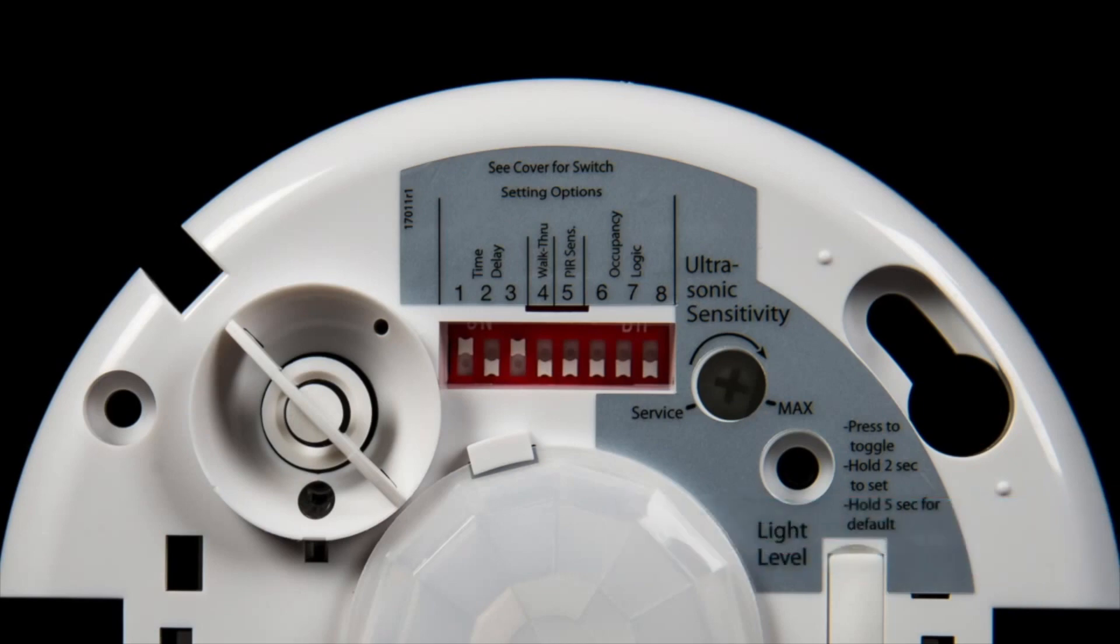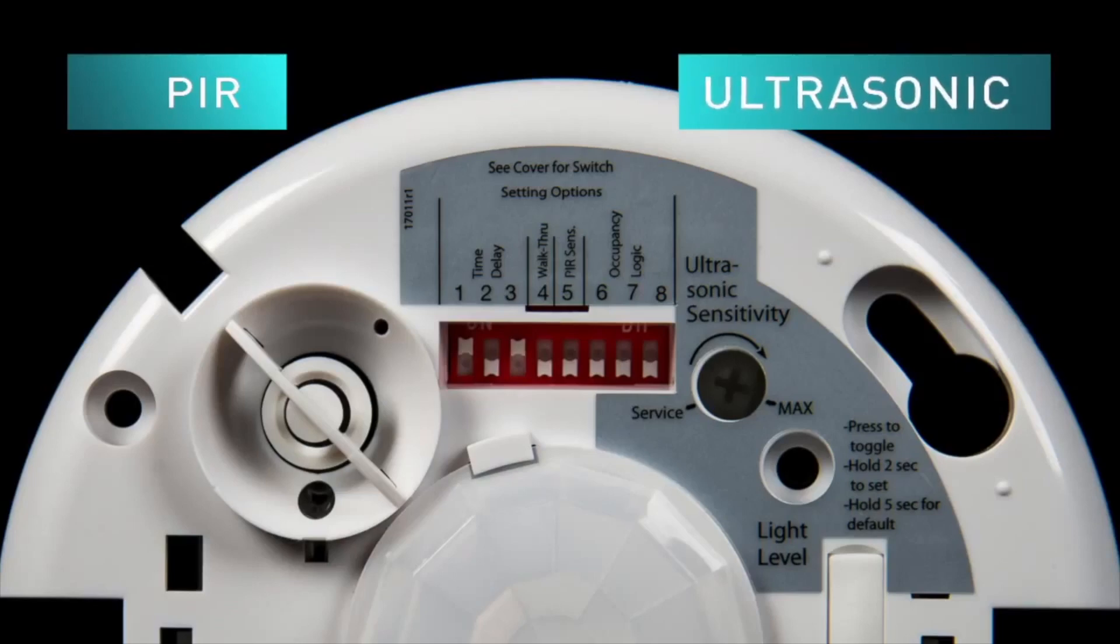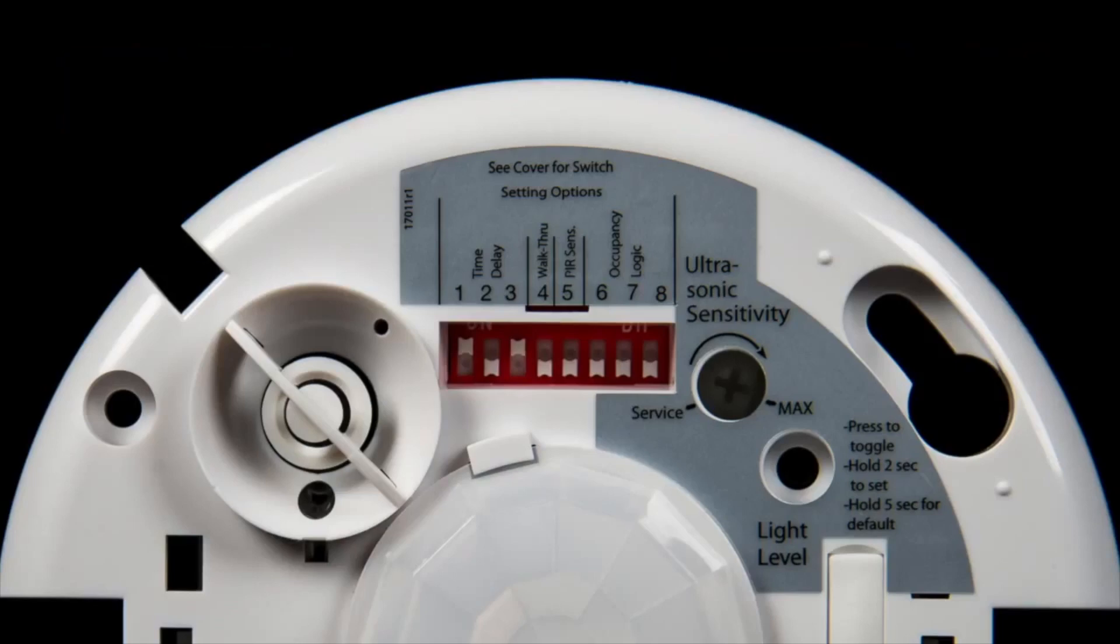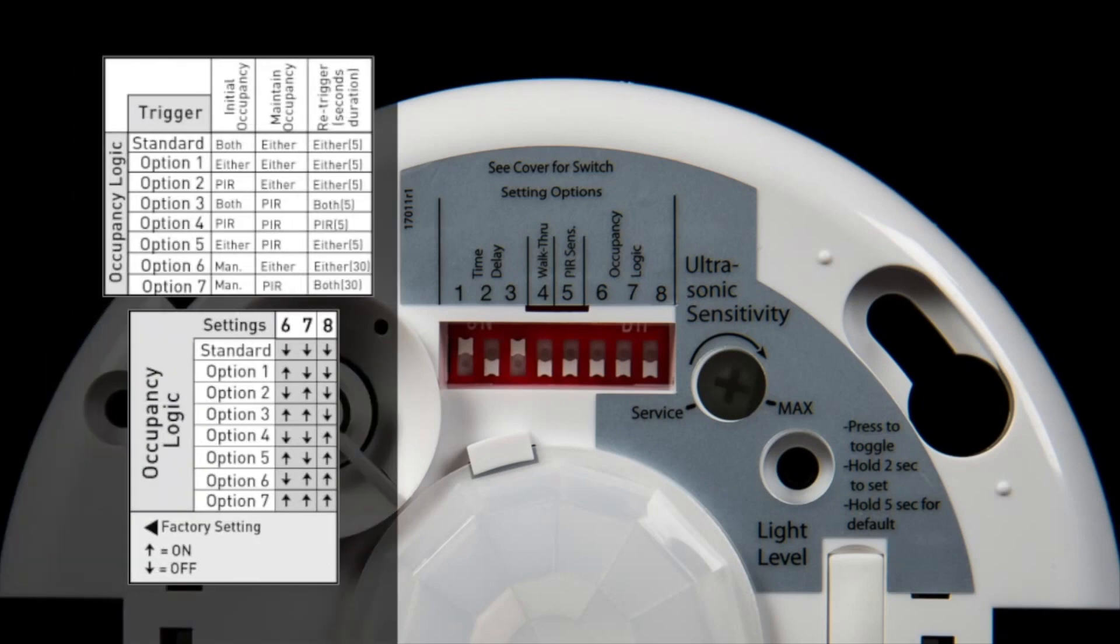Another common question is with regard to the adjustment of how the two technologies work together: PIR and ultrasonic. Wattstopper's DT series dual technology sensors allow for eight different trigger modes to ensure the lights are only on when they are meant to be.